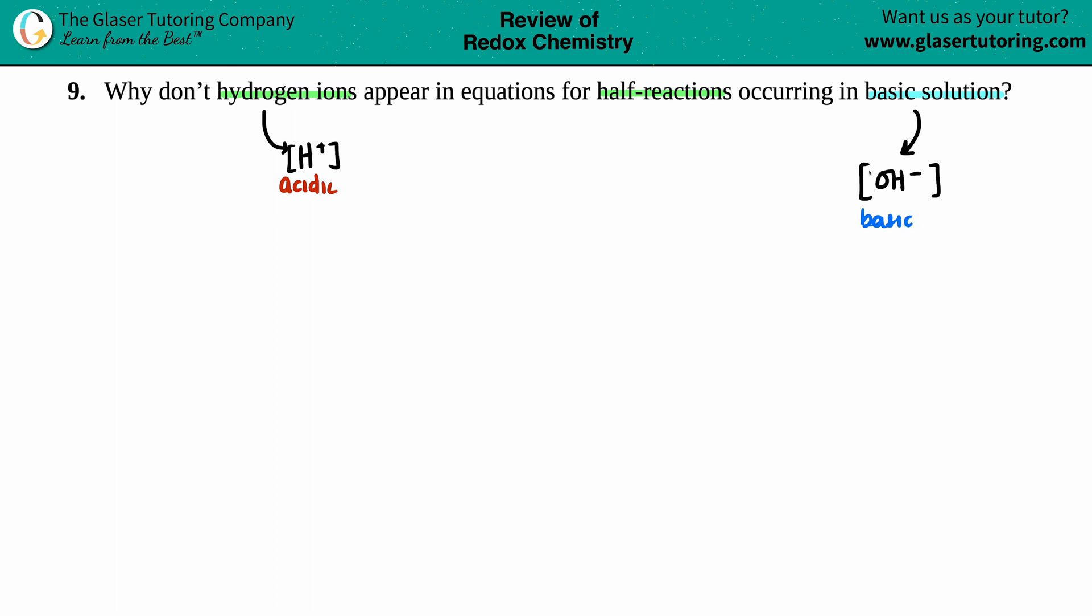So it kind of makes sense that you would have OH minus in a basic solution. Now just remember in a basic solution your concentration of OH minus is way greater than the concentration of your H plus, even more so that basically since this is so small it basically does not exist.